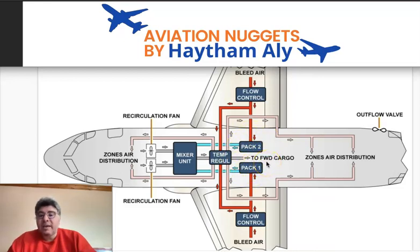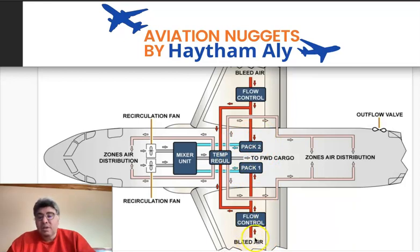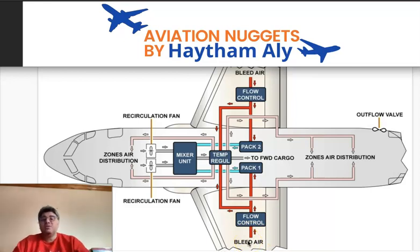The packs get their air from the bleed air system — Chapter 36. The bleed air is one of the users for the air conditioning packs. Air comes from the high-pressure compressor of the engine, regulated in terms of pressure and temperature before supplying the packs. However, this bleed air is still very hot and at high pressure — even after the pre-cooler, it can be around 150 to 200 degrees Celsius.